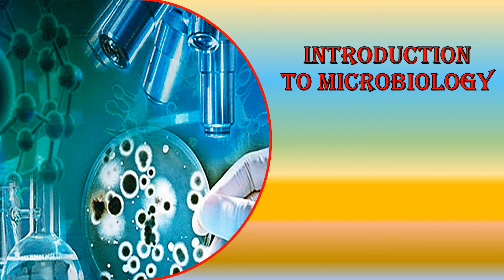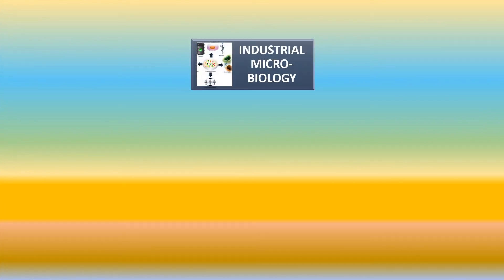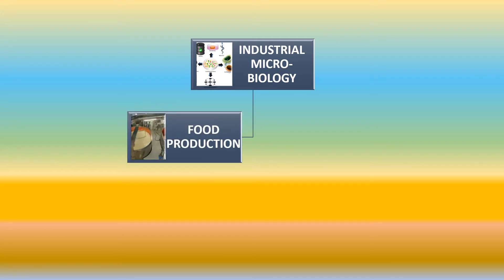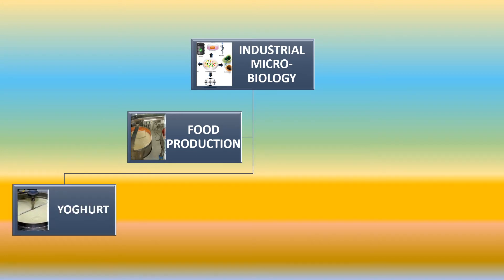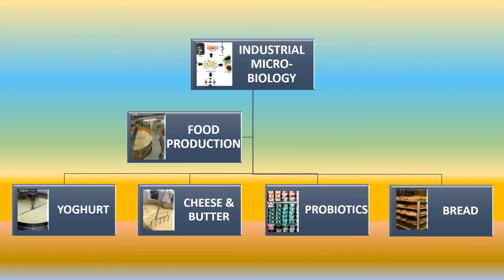Hello and welcome to one more lesson in science and technology 2, called Introduction to Microbiology. In this unit we will learn how microbes are responsible for certain food products. Industrial microbiology is a branch of microbiology, and food production is one part of it. We will learn about yogurt production, cheese and butter production, making of bread, and probiotics.